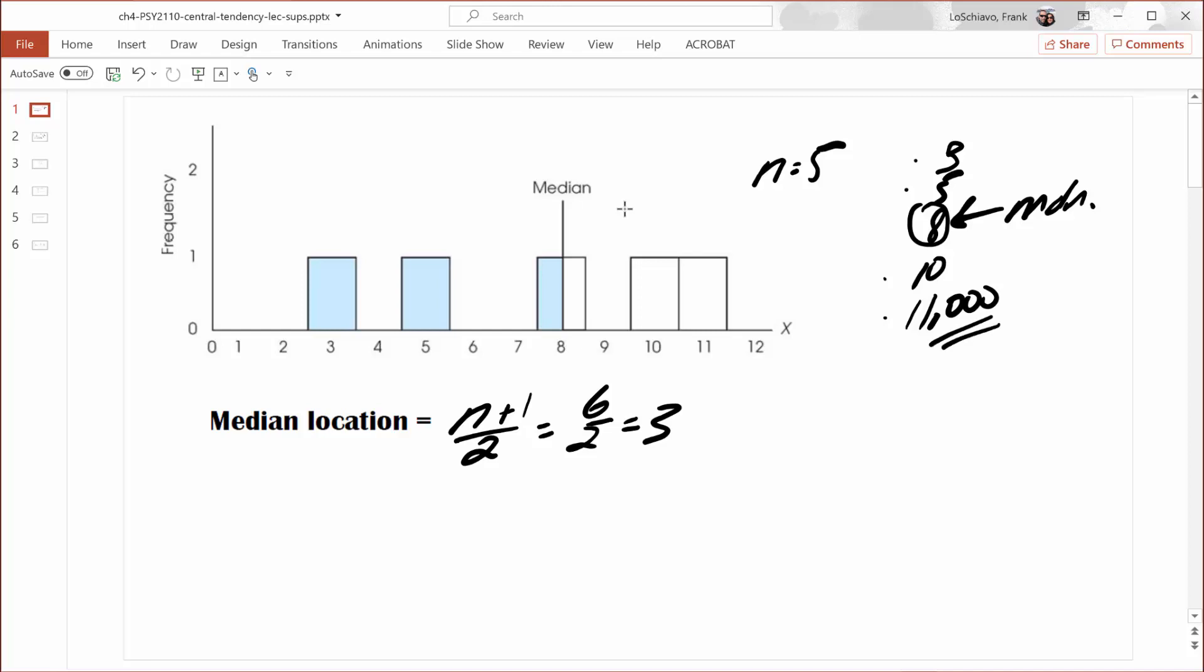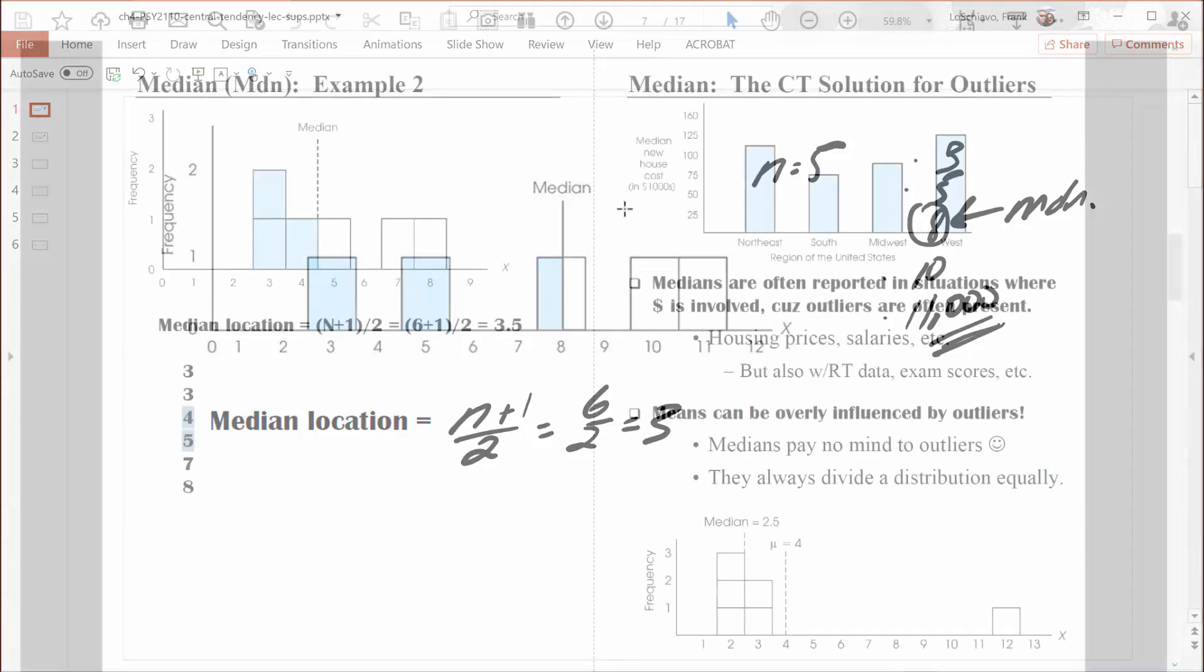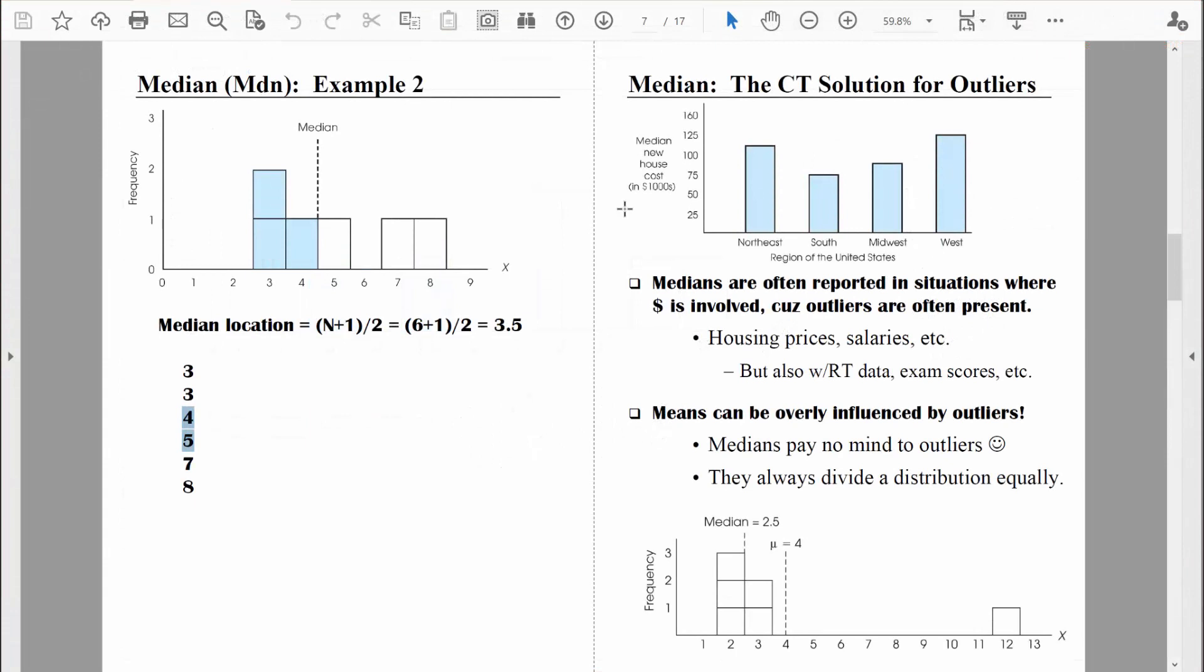So when we have outliers in our data, just like that value right there, the median doesn't care. The median's not affected at all. Well, that's the point you really want to remember. About the only reason that people are really looking at medians is because means are so affected by those outliers. I mentioned that housing prices often include outliers. So almost always when you're hearing about real estate values, people report medians.